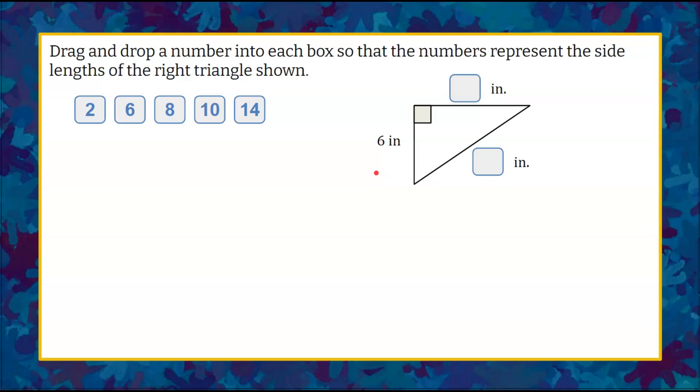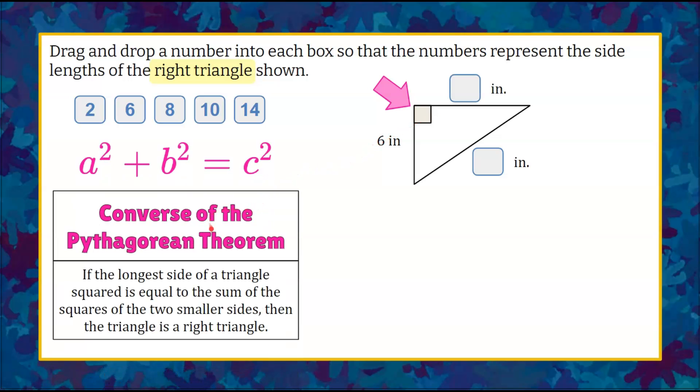Welcome back. So here we're going to talk about we have a right triangle. Here's our right angle. And we know when we have a right triangle, we can talk about the Pythagorean Theorem. And conversely, what that means is that if the longest side of the triangle is squared, then the sum of the squares and the two smaller sides, then the triangle is a right triangle.